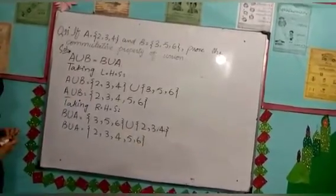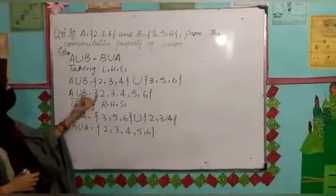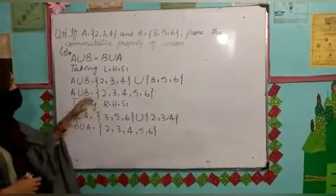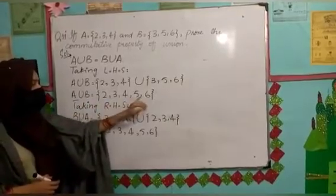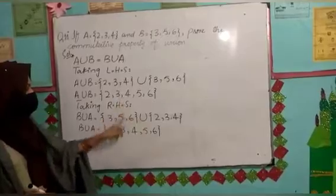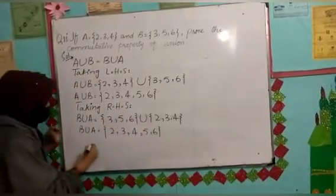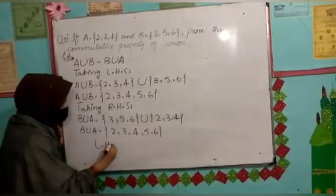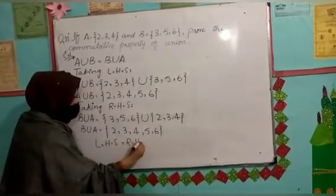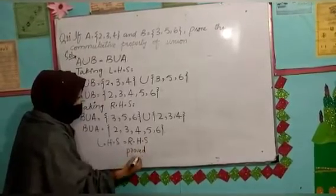Okay friends, now match the answers. This is the right hand side answer and this is the left side answer. {2, 3, 4, 5, 6}. {2, 3, 4, 5, 6}. Both sides are equal. Left hand side is equal to right hand side. Proved. This is your answer.